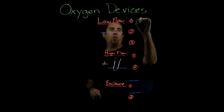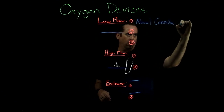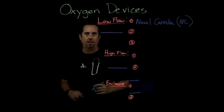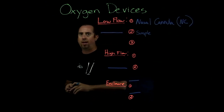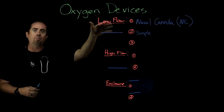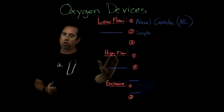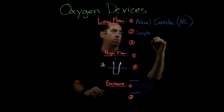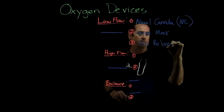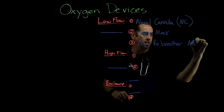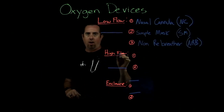The first low flow device we'll talk about is nasal cannula, also called NC. The next one is simple mask. I'm really picking out the main ones that as a clinician you need to know for test-taking — these are the most common and most used in clinical practice and board exams. And then we have our non-rebreather.